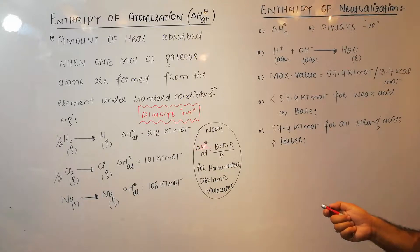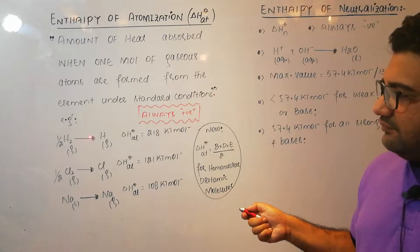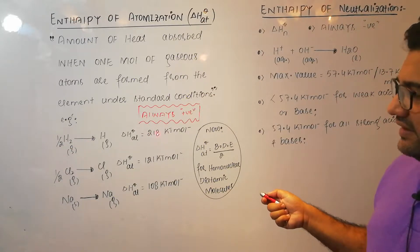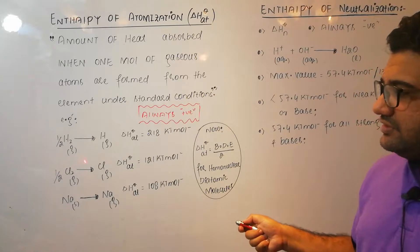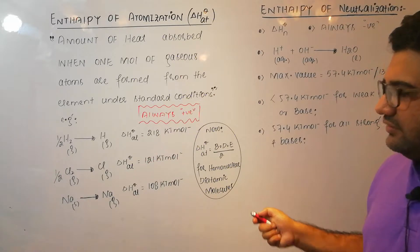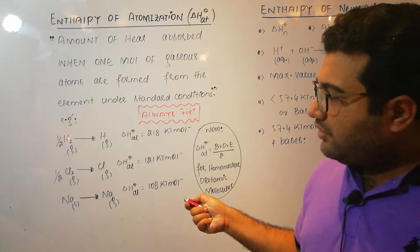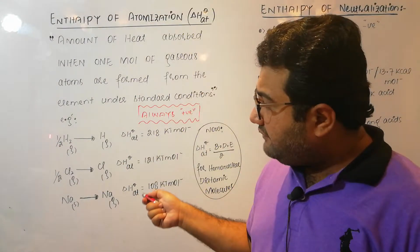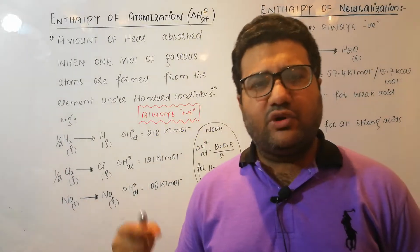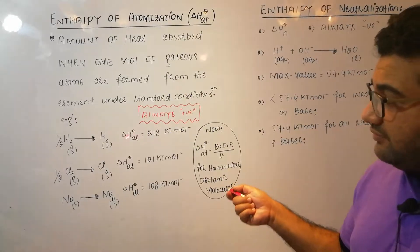An important point: the enthalpy of atomization is actually half of the bond dissociation energy, in the case of homonuclear diatomic molecules. The bond dissociation energy of H₂ is 436 kJ/mol, and its enthalpy of atomization is half of that. Similarly, for chlorine, the bond dissociation energy is 242 kJ/mol and 121 kJ/mol is the half. This is because we take half a mole of H₂ or Cl₂ and break the bonds. If we took one full mole and broke it into gaseous atoms, that would be the bond dissociation energy — double the enthalpy of atomization.